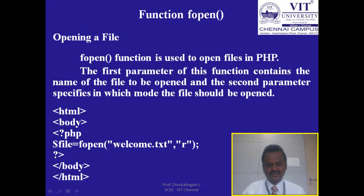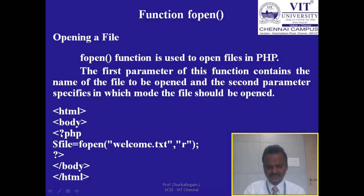To open a file, we use the fopen function. fopen accepts two parameters: the first is the name of the file, and the second is the mode. Here the name of the file is welcome.txt and the mode is R. HTML code is embedded with PHP — whenever you want to write PHP code, use the tag <?php, write your PHP code, then close with ?>. Finally, save the file as name.php.